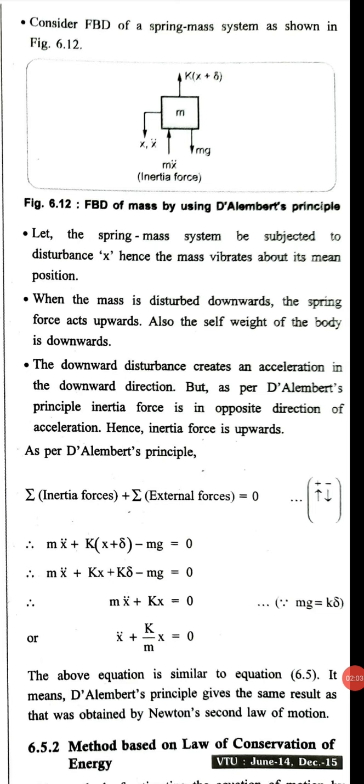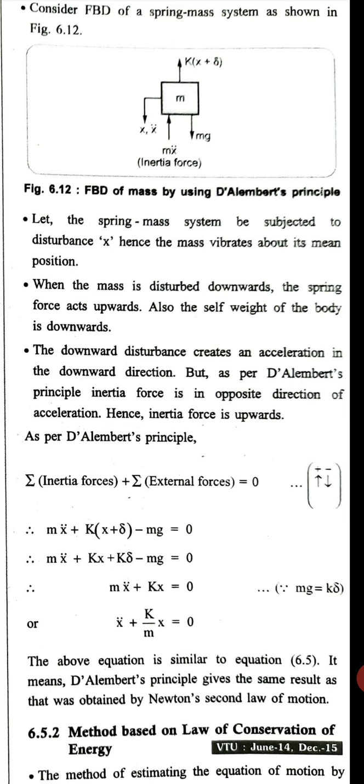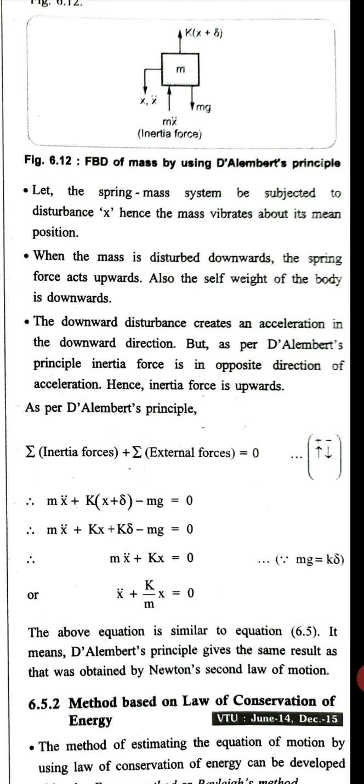The summation of inertia forces plus the summation of external forces should equal zero. Here consider positive downwards as positive. The inertia force, that is the accelerating force mx double dot, plus kx plus k delta minus mg equals zero.